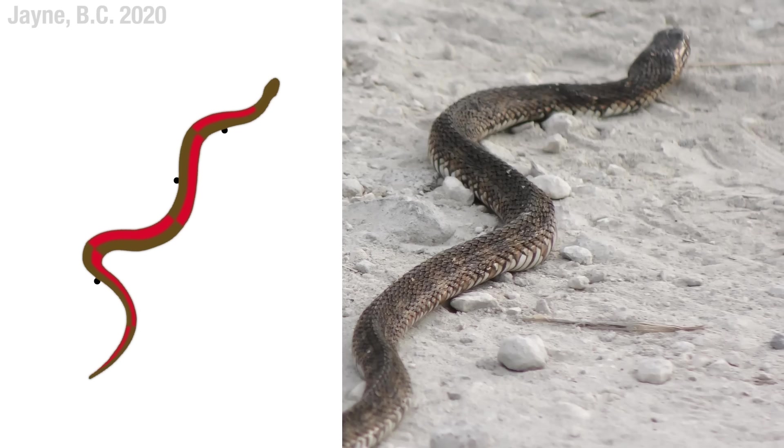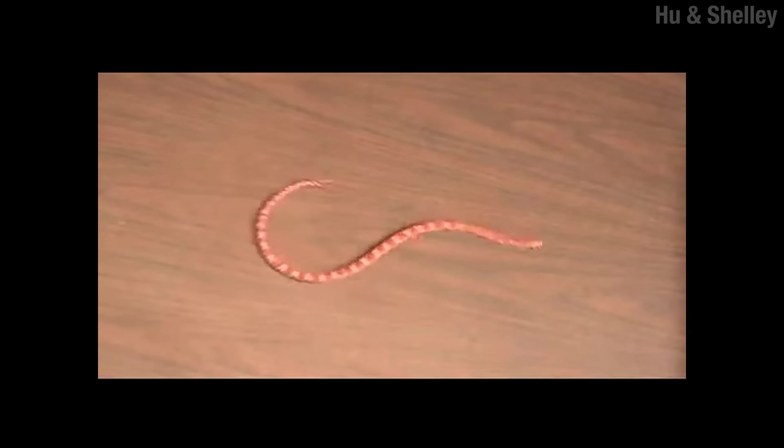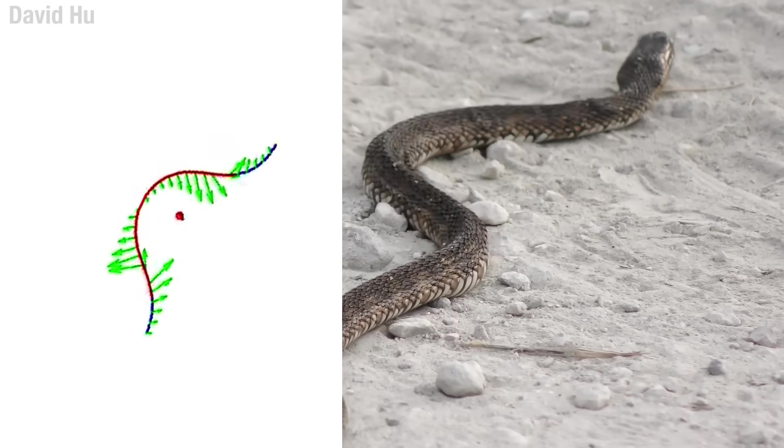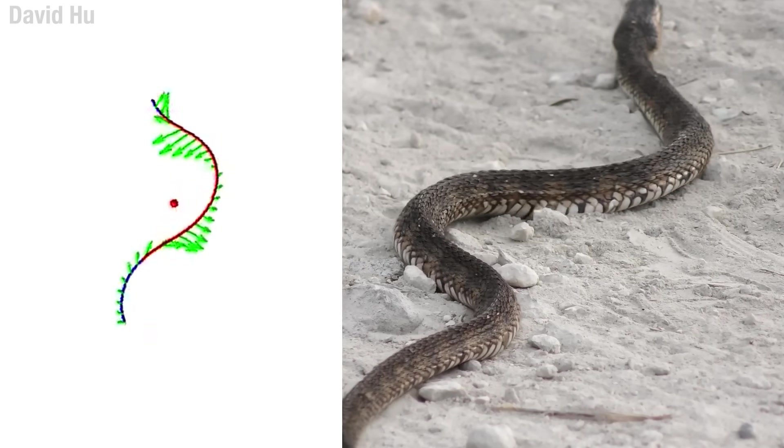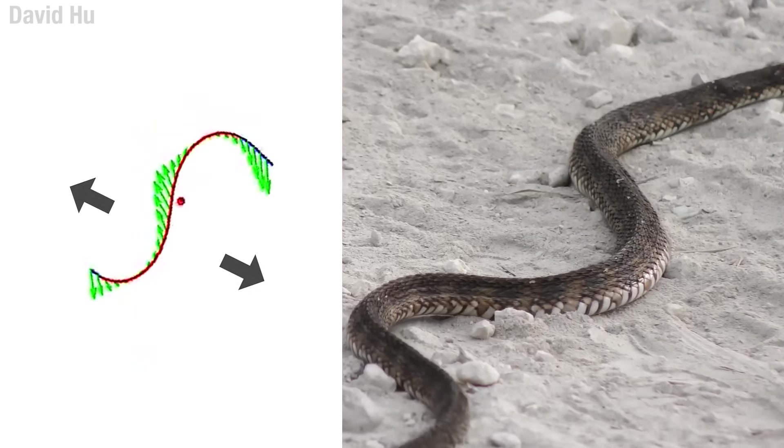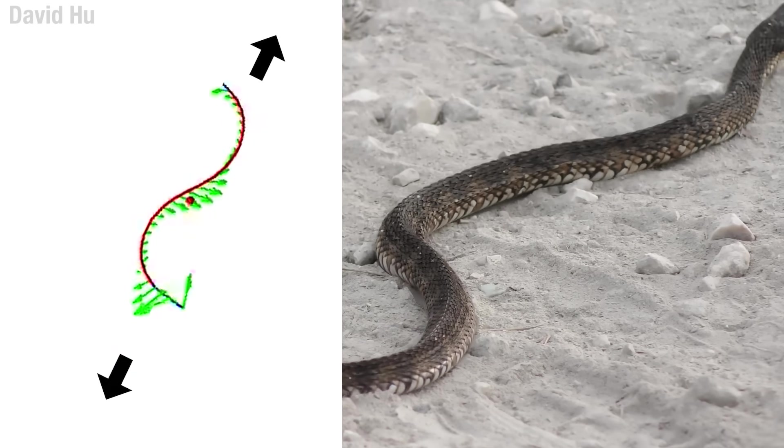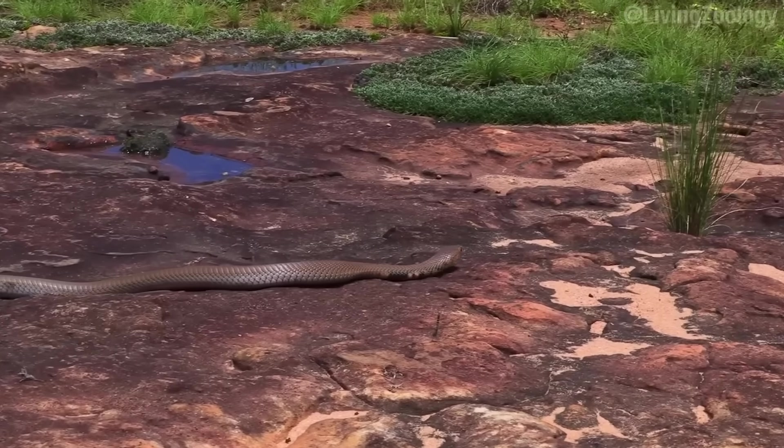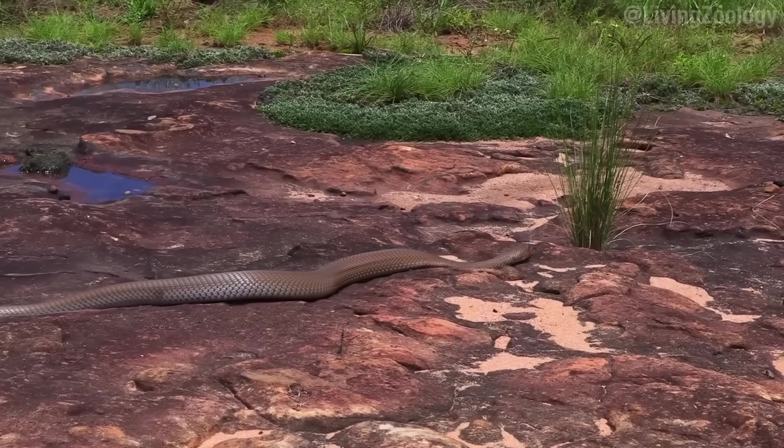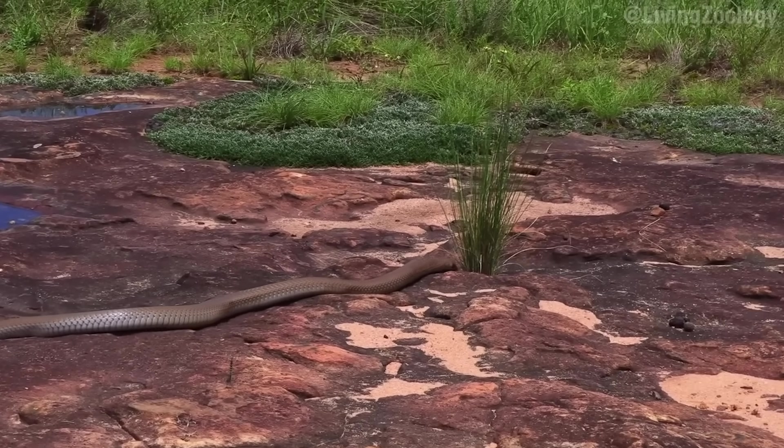The curves are formed by contracting muscles on one side of the snake and relaxing them on the other, then switching sides when the curve changes direction. You can see these waves pass backwards through the snake's body if you put it on a frictionless surface. As the snake pushes against things, it generates all sorts of forces. Some cancel each other out, leaving the ones in the direction of the movement.